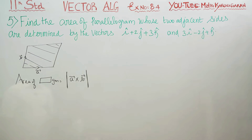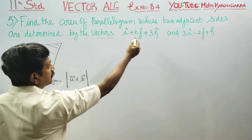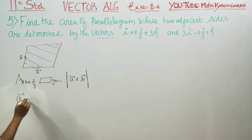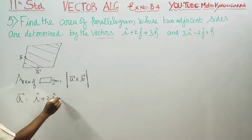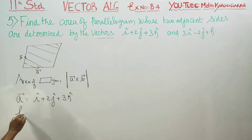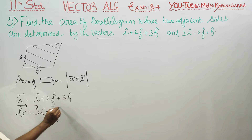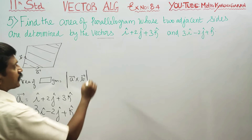Adjacent sides of the parallelogram. Let us choose the first one as A vector. A vector is equal to i plus 2j plus 3k. And B vector is equal to 3i minus 2j plus k. We will start with A cross B.